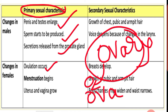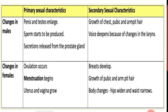Release of ova from the ovary is called ovulation — that is the primary sexual character in females. Next, menstruation begins; the menstrual cycle starts at the time of puberty. The uterus and vagina also grow. These are the primary sexual characters in females.